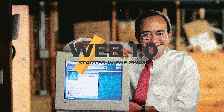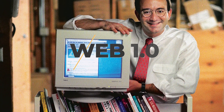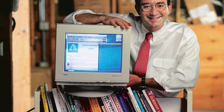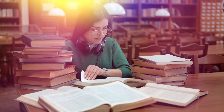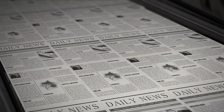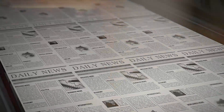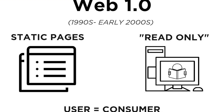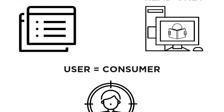First up, Web 1.0, which started in the 1990s, when we saw the beginning of the digital era. During this time, the internet was primarily used to consume information and news, and people could communicate only via emails. The information you would normally find in a newspaper or in a library was now available online, but there wasn't much you could actually do with it. The pages were static, read-only versions, where users could simply consume the information.